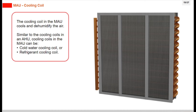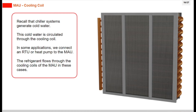The cooling coil in the MAU cools and dehumidifies the air. Similar to the cooling coils in an AHU, cooling coils in the MAU can be a cold water cooling coil or a refrigerant cooling coil. Recall that chiller systems generate cold water, which is circulated through the cooling coil. In some applications, we connect an RTU or heat pump to the MAU, and the refrigerant flows through the cooling coils in these cases.